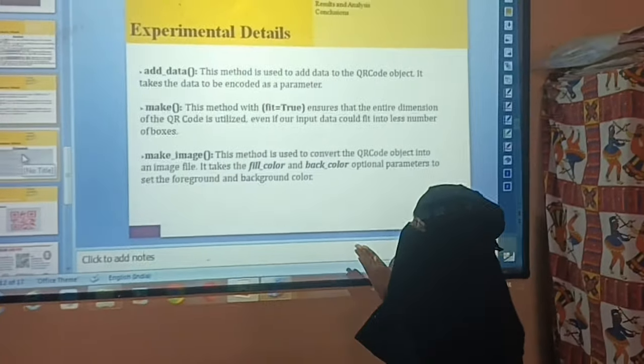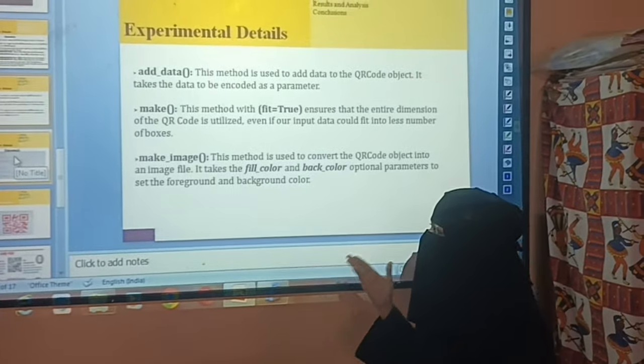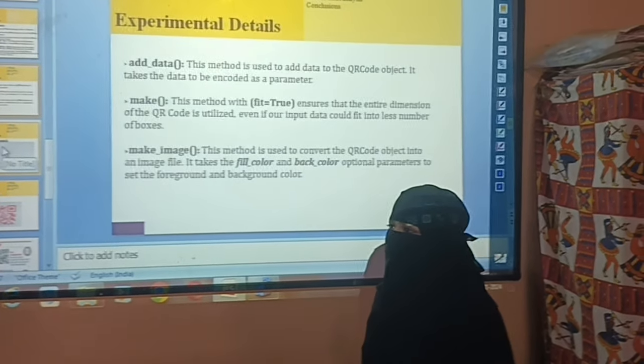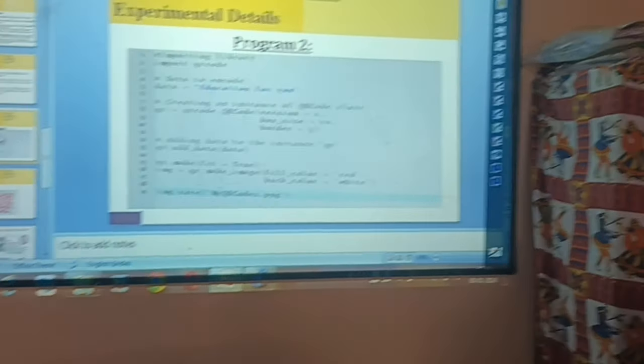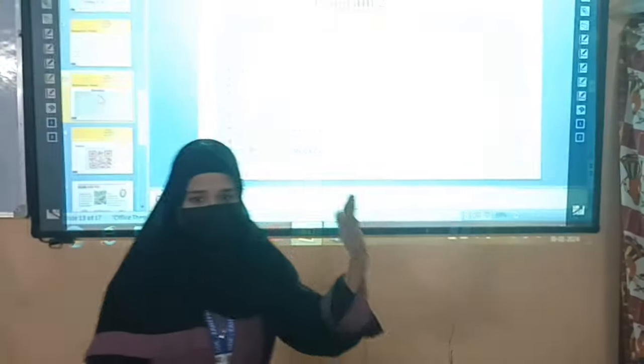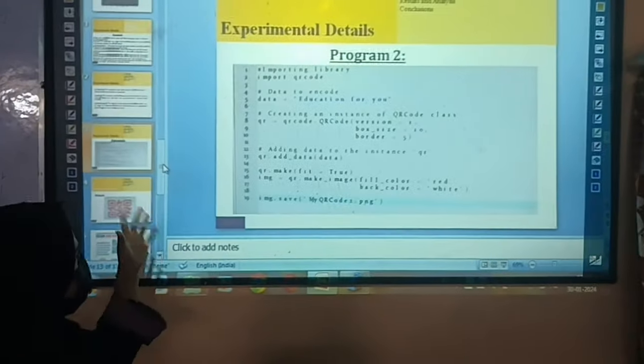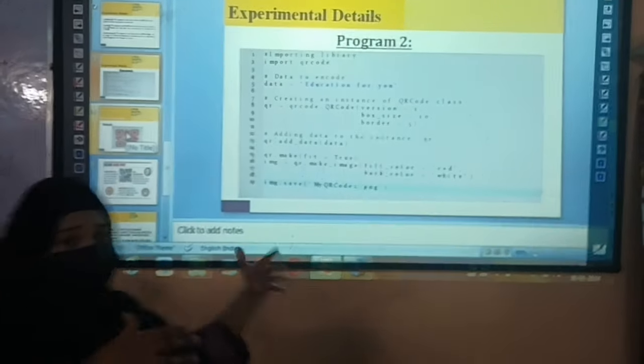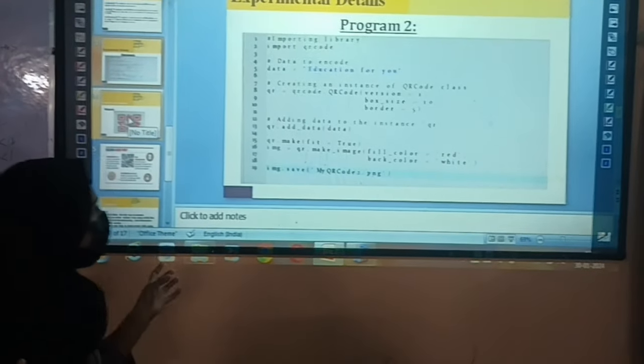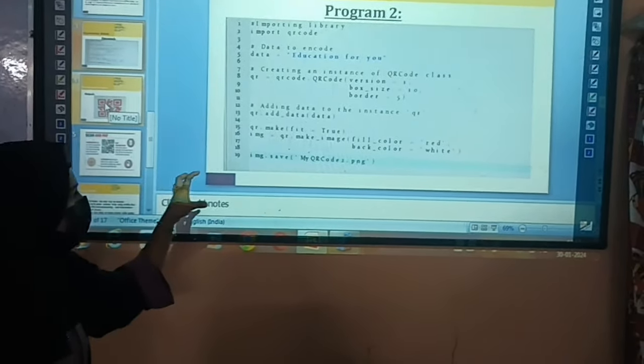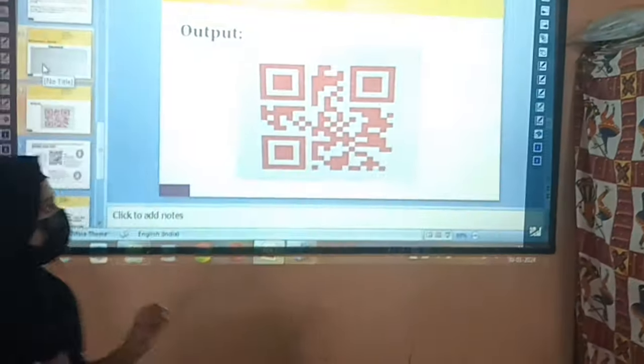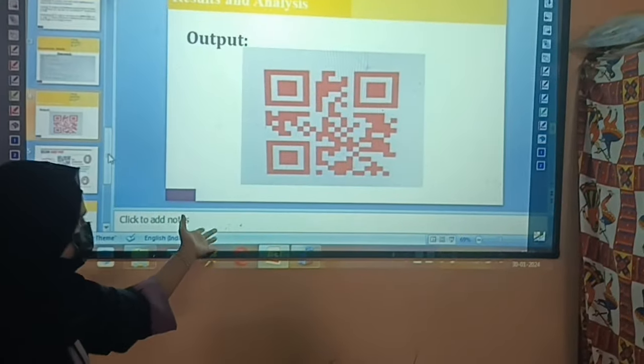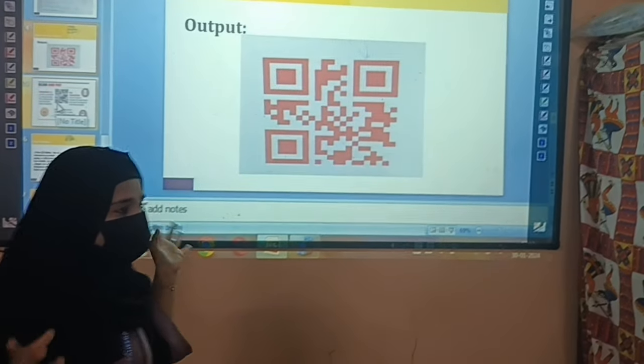The add data function, make function, and make image function are used to execute the programs. This is program 2 executed by our team. We import QR code library, add box size and borders, fill the color red and back color white, and save the image as PNG. You can see this output result: the fill color is red and the back color is white.